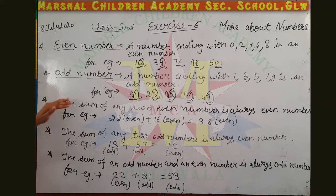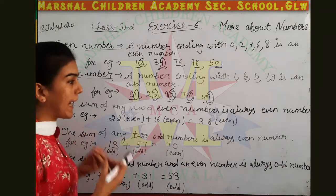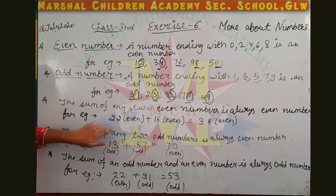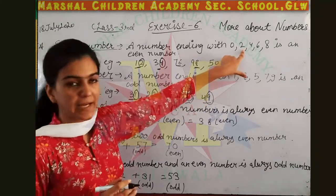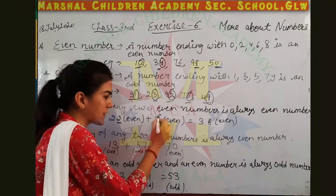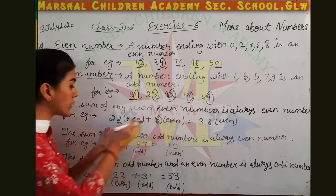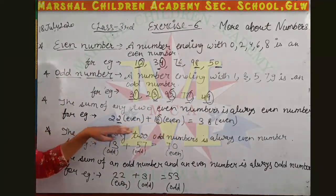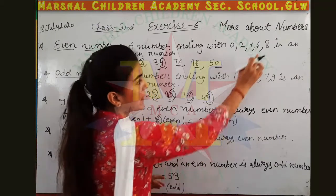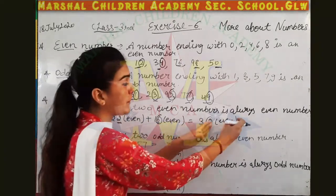There are also some basic concepts. The sum of any two even numbers: if we have two even numbers and we add them, the answer will also be an even number. For example, 22 ends with two — even number. 16 ends with six — even number. 22 plus 16 equals 38, which ends in eight — even number. So adding two even numbers gives an even number.